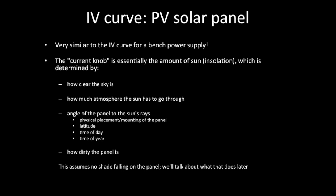You don't have knobs, but if you did, basically the current knob is the amount of sun, or insolation. That's determined by things such as how clear the sky is, how much atmosphere the sun has to go through, the angle of the panel to the sun's rays, which depends on how you've placed it, where you are on the earth, the time of day, and the time of year.